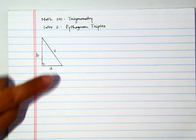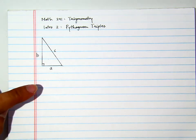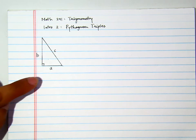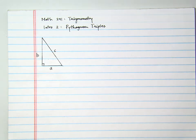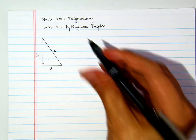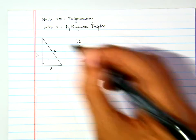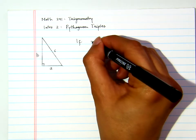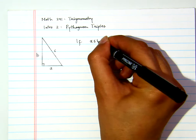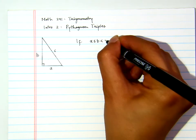Suppose we have a right triangle whose lengths of the legs are A and B and the length of the hypotenuse is given by C. Now, if from this graph here, if A is less than or equal to B, which is definitely less than C,